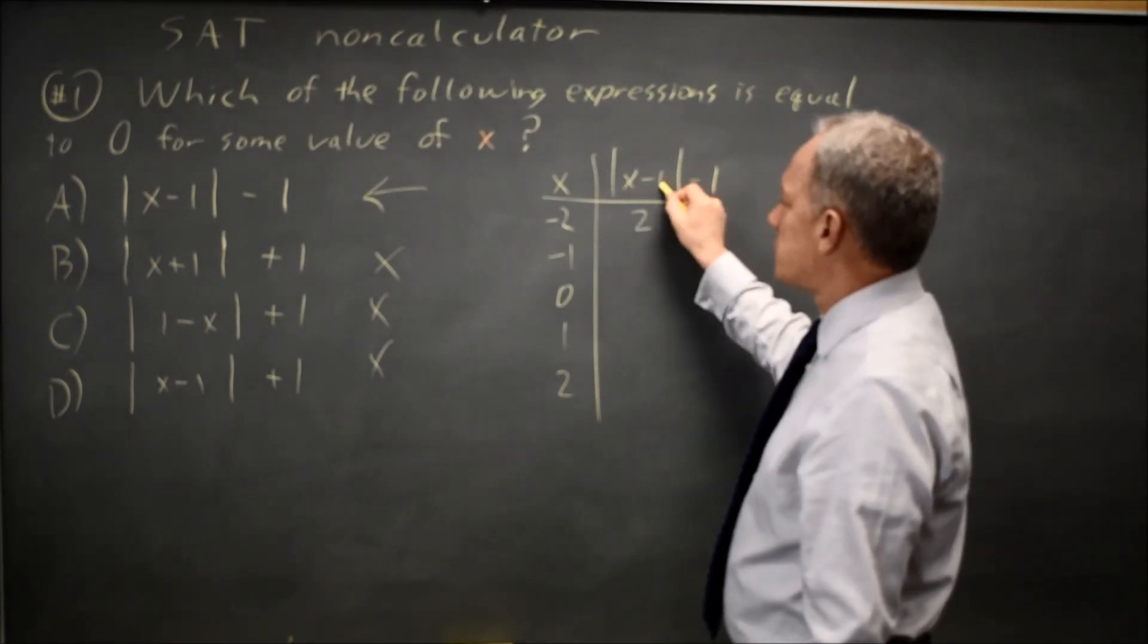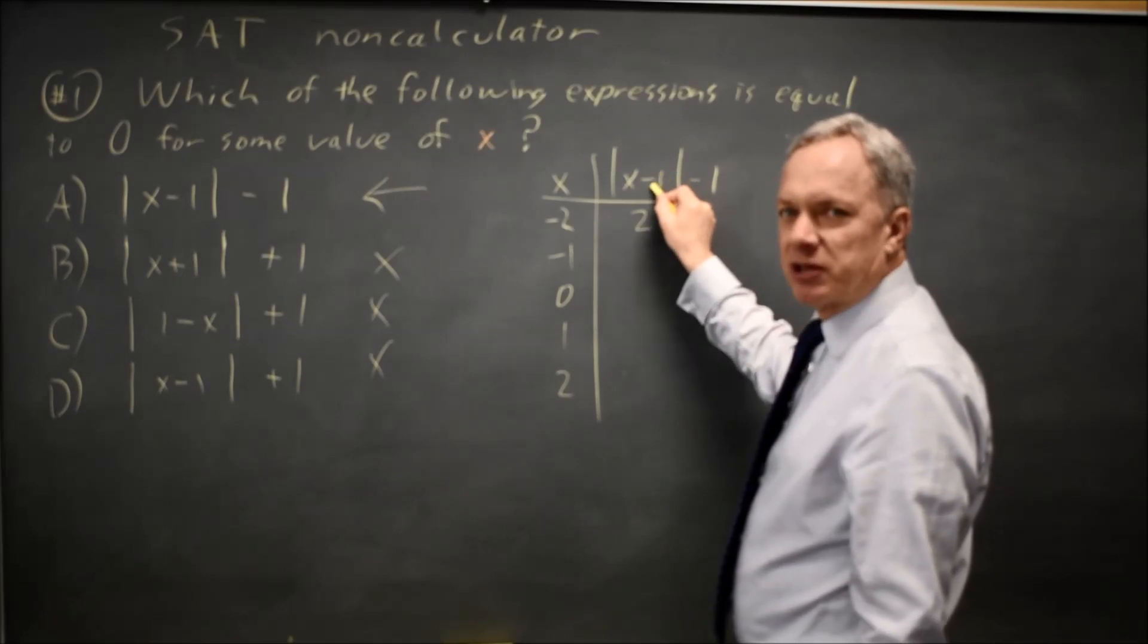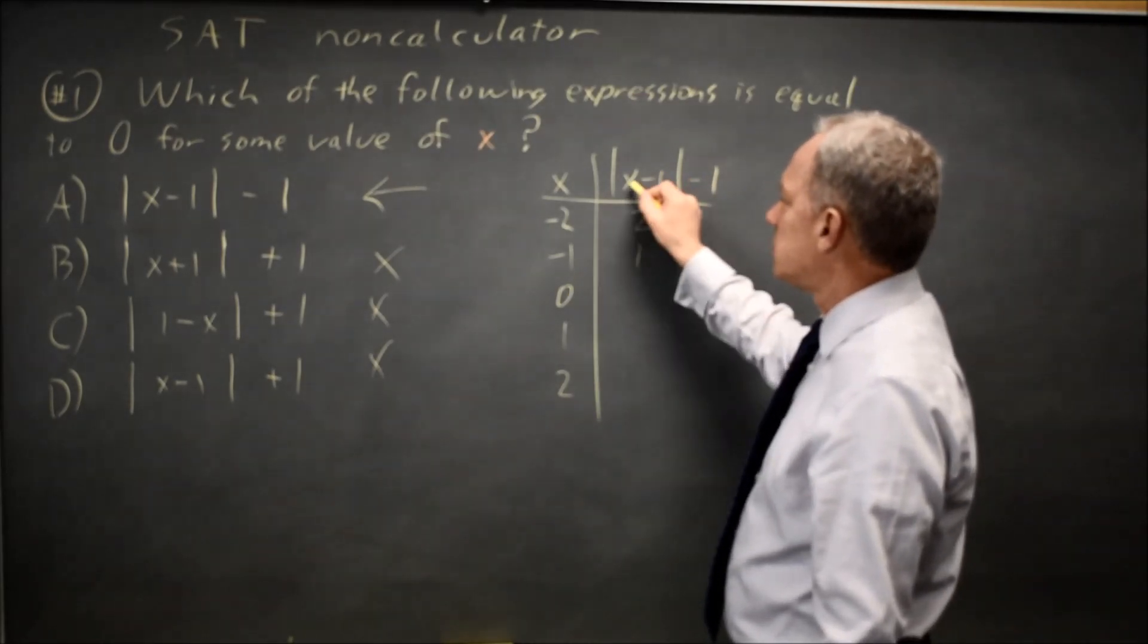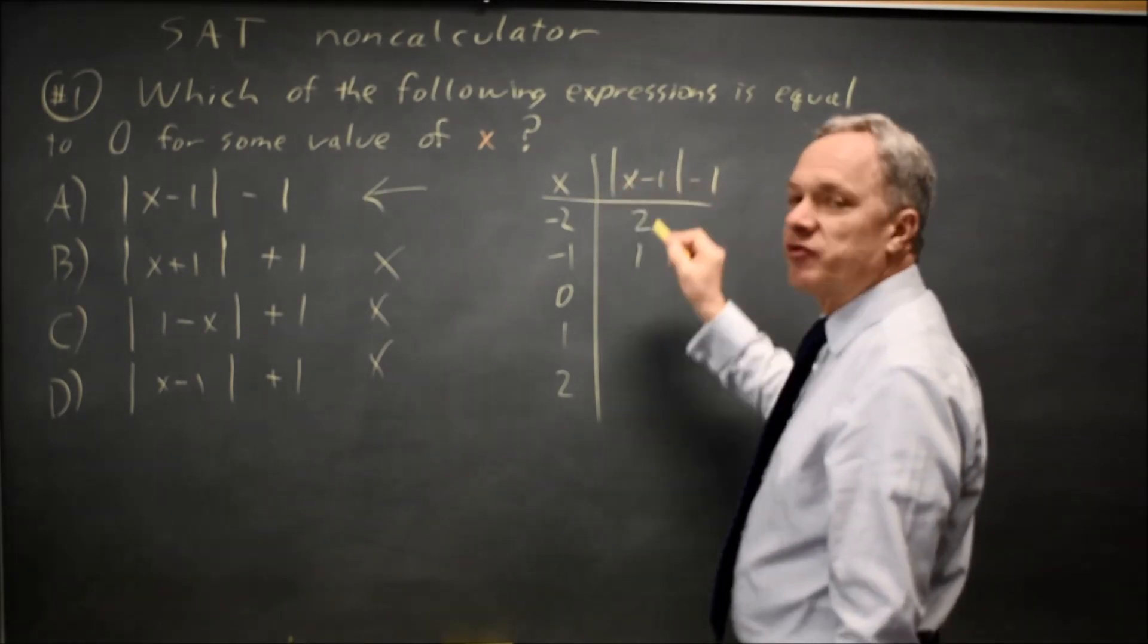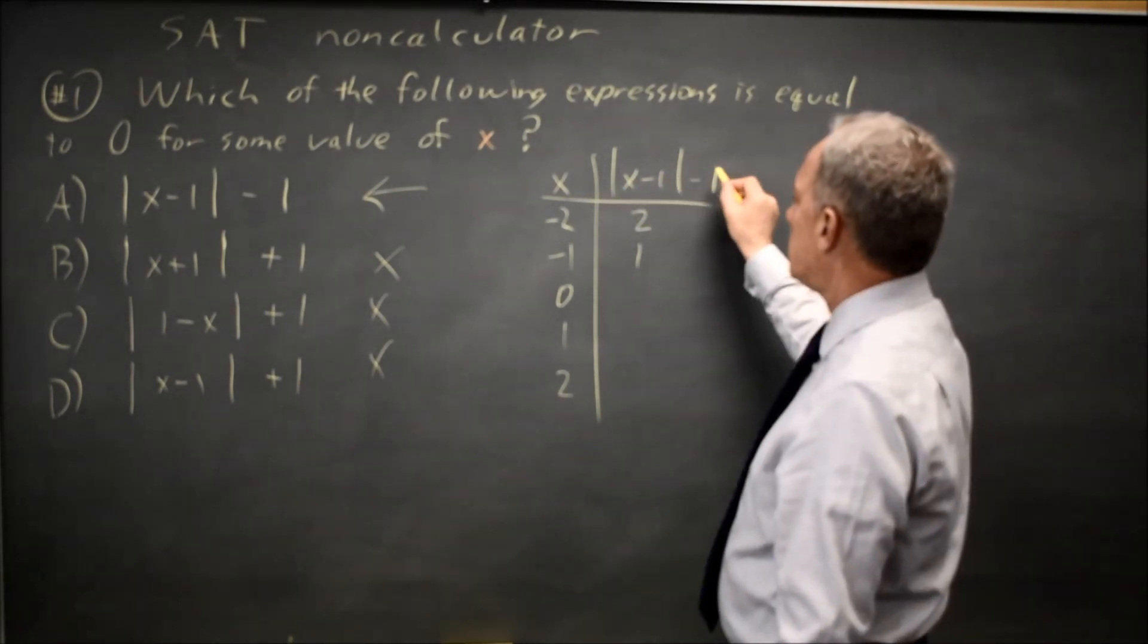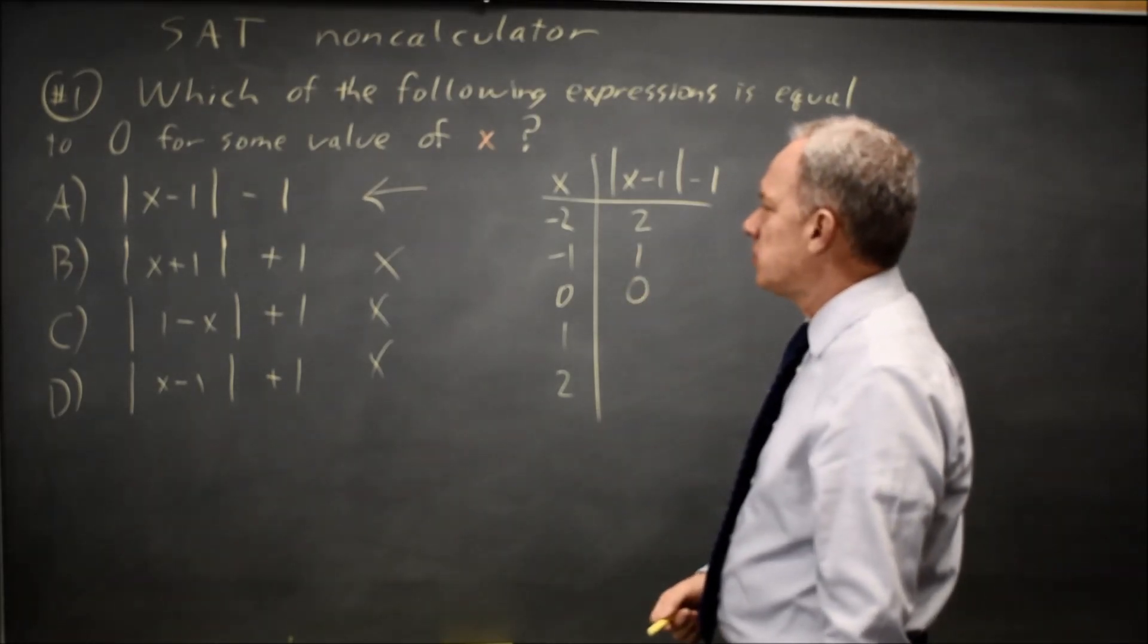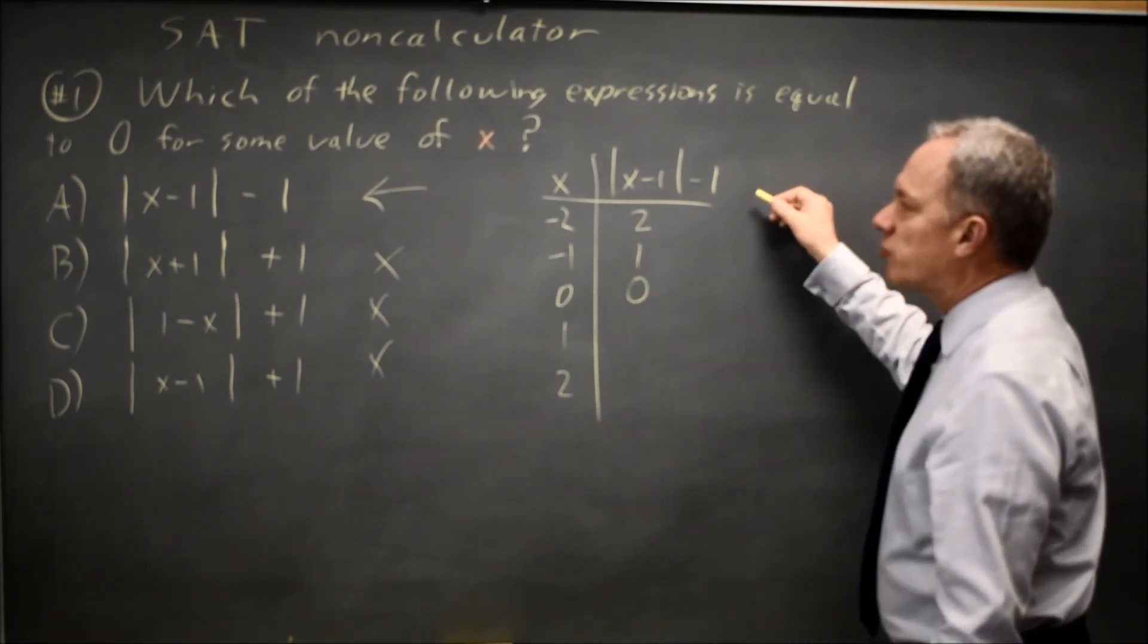At negative one, negative one minus one is negative two, absolute value of negative two is two, minus one is one. At zero, zero minus one is negative one, the absolute value of negative one is positive one, and positive one minus one is zero, so we just equaled zero.